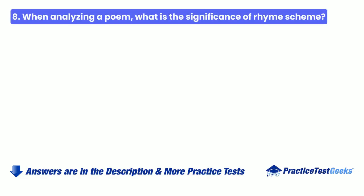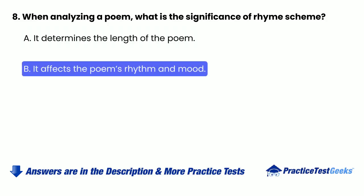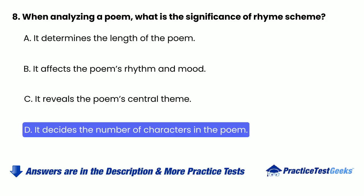8. When analyzing a poem, what is the significance of rhyme scheme? A. It determines the length of the poem. B. It affects the poem's rhythm and mood. C. It reveals the poem's central theme. D. It decides the number of characters in the poem.